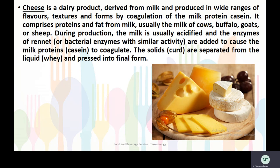Cheese is a dairy product derived from milk, produced in a wide range of flavours, textures and forms by coagulation of the milk protein casein. It comprises proteins and fat from milk — usually the milk of cows, buffalo, goats or sheep. During production, the milk is usually acidified and enzymes of rennet are added to cause the milk proteins to coagulate. The solids are separated from the liquid and pressed into final form.